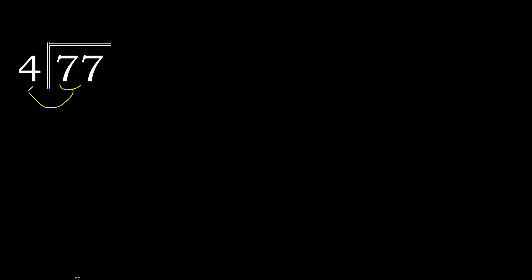77 divided by 4. 7 is not less, therefore with 7, fold. Multiply by which number is nearest to 7 but not greater. 4 multiply by 2 is 8 — 8 is greater. Multiply by 1 is 4.